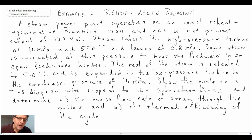There's the example problem we have before us. As with all examples and problems, the first thing to do is extract the pertinent information we need to solve this. We're dealing with an ideal reheat regenerative Rankine cycle, which tells us how this system is constructed and designed. We're also told the net power output - the total output of the plant is 120 megawatts.